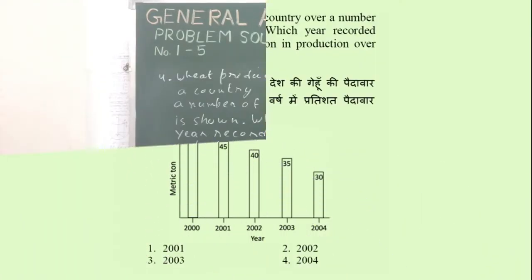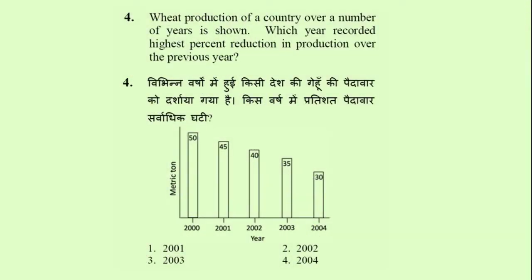Problem number 4: wheat production of a country over a number of years is shown in a bar chart. Which year recorded the highest percentage reduction in production over the previous year? Option 1: 2001, option 2: 2002, option 3: 2003, option 4: 2004.